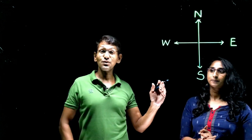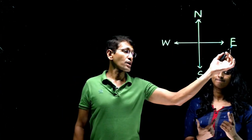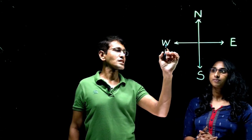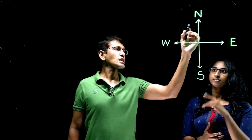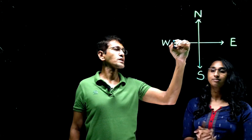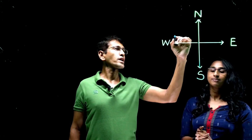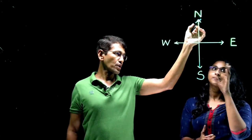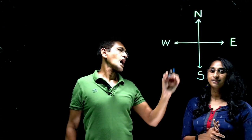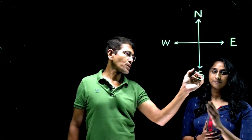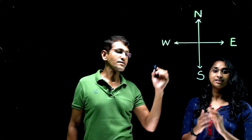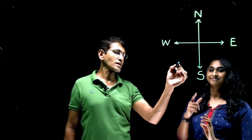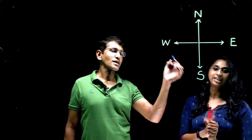Which are the eight directions? We have four cardinal directions. In between: if this is West and this is North, any point between West and North is Northwest. Any point between North and East is Northeast. Any point between South and East is Southeast. And if somebody is facing the direction between South and West, that is Southwest.